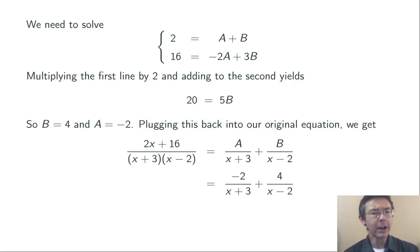You should check that if you get a common denominator there in that last line, the -2/(x + 3) and so on, you actually get back what you started with, the (2x + 16)/(x + 3)(x - 2).